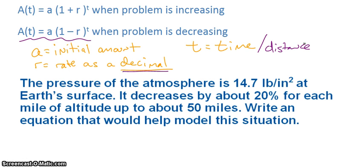For example, in the one below, we are talking about distance. Often, it's going to be time. But it's really whatever other variable you would be manipulating. So, if I'm looking at this problem, the pressure of the atmosphere is 14.7 pounds per square inch at the Earth's surface. It decreases by about 20% for each mile of altitude up to about 50 miles. Write an equation that would help model this situation.